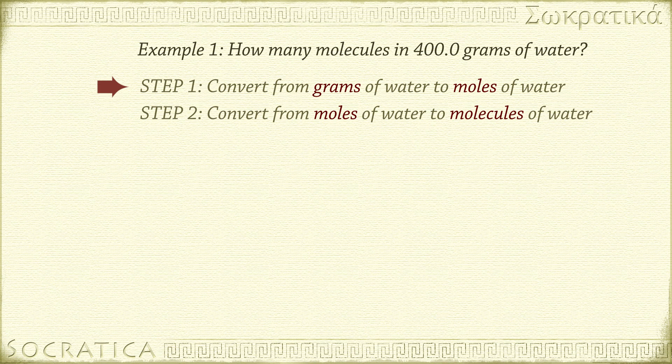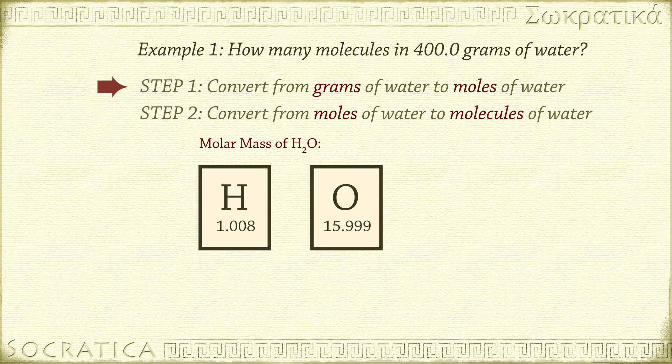If we want to convert from grams of water to number of moles of water, we'll use the molar mass. The molar mass of water tells you how many grams there are per mole of water. To find the molar mass of water, H2O, sum up the gram atomic masses of the individual atoms from the periodic table. There are two atoms of hydrogen and one atom of oxygen, so 2 times 1.008 grams per mole plus 1 times 15.999 grams per mole equals 18.015 grams per mole. Rounded to one decimal place, we get 18.0 grams per mole for the molar mass of water.